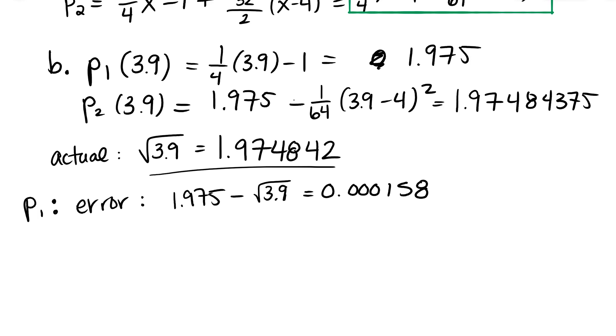If I do the other one, 1.97484375, and I subtract the square root of 3.9 - wow, that's even better. For P2, the error, if I take the difference between the actual value, it's 0.000001234519. And I could even find the percentage that we're off. That's going to be a pretty low percentage. You divide that by the square root of 3.9 and then multiply by 100 to make it a percentage.